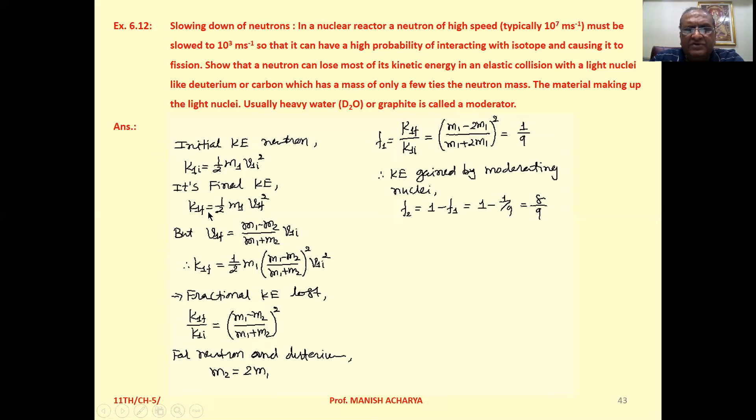Then K₁f = ½M₁[(M₁ - M₂)/(M₁ + M₂)]² V₁ᵢ². Now for fractional kinetic energy, in this particular equation we can say ½M₁V₁ᵢ² is K₁ᵢ.